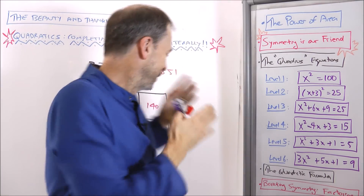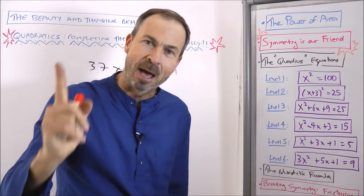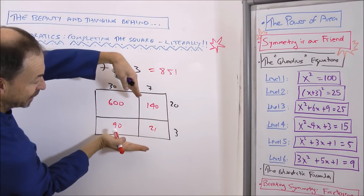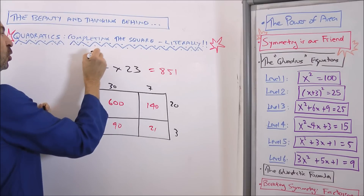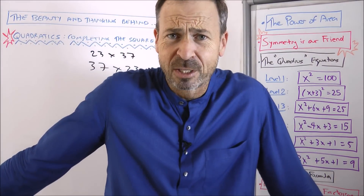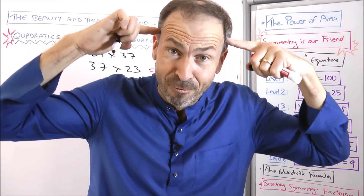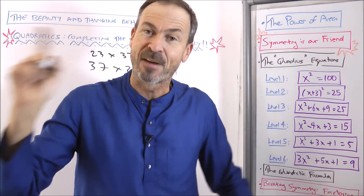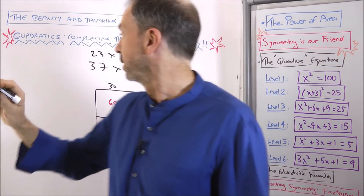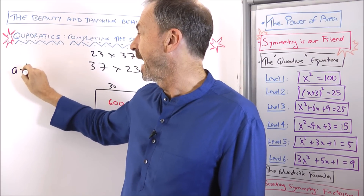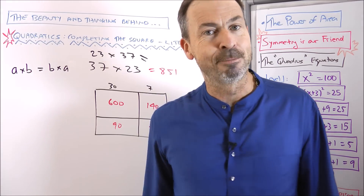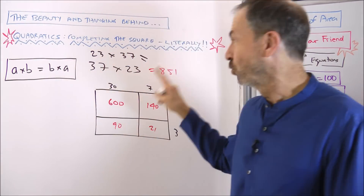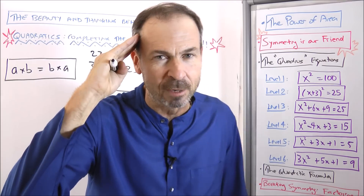There's more here. If I rotate the 37-by-23 rectangle 90 degrees, I'd be working out 23 times 37 — same rectangle, same area, so it must also equal 851. This area model is suggesting something we believe about numbers: for any a and b, a times b equals b times a. We can switch the order of multiplication. That feels natural and right.